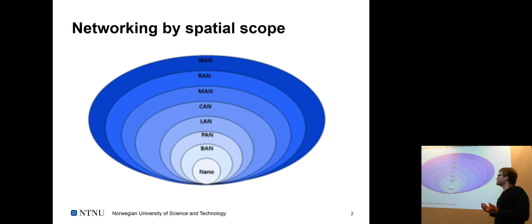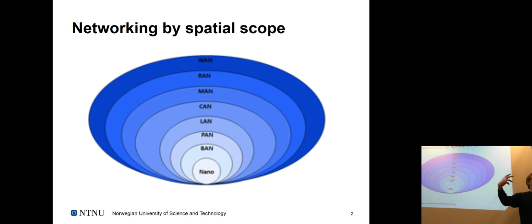Different from courses like cloud computing, which mostly focused on internet-scale interactions, mobile networking forces us to think about scope differently. When you expose something on AWS, you can't just think about people in your immediate environment — you need to think globally. Scope ranges from WAN down to local area networks.